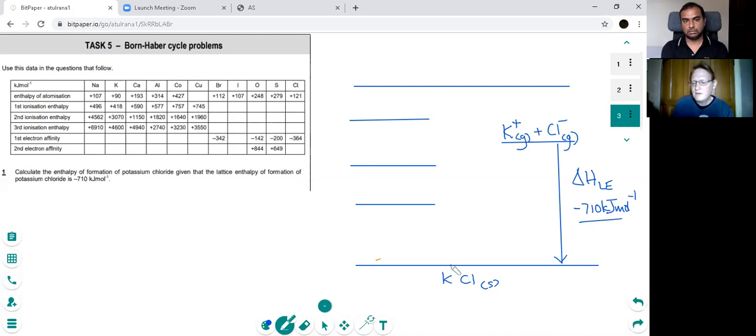So we've got to get from the ionic compound to the gaseous ions. And the first step of that is to do the enthalpy of formation, which is the formation of the ionic compound from its elements in their standard states under standard conditions. So we've got potassium, which is a solid, and chlorine, which is Cl2, a gaseous molecule. And then to balance, we would need a half Cl2 there. And then that's our enthalpy of formation. And that's what we're trying to calculate.